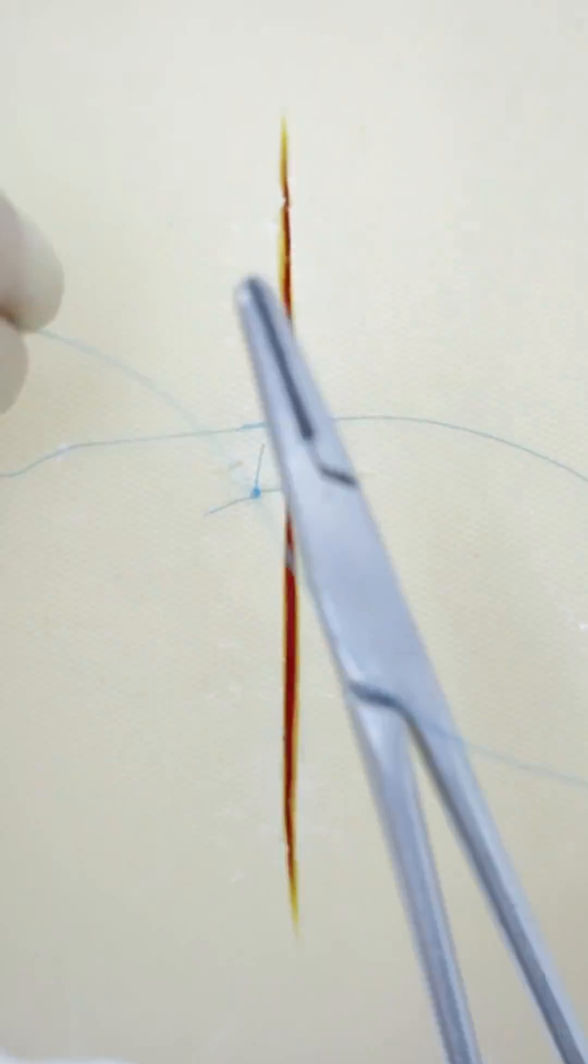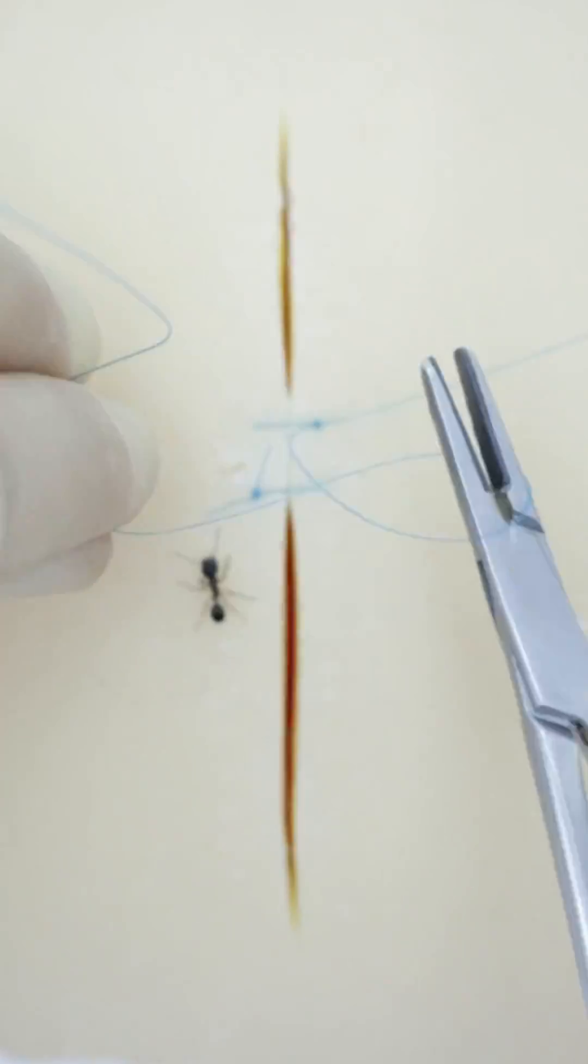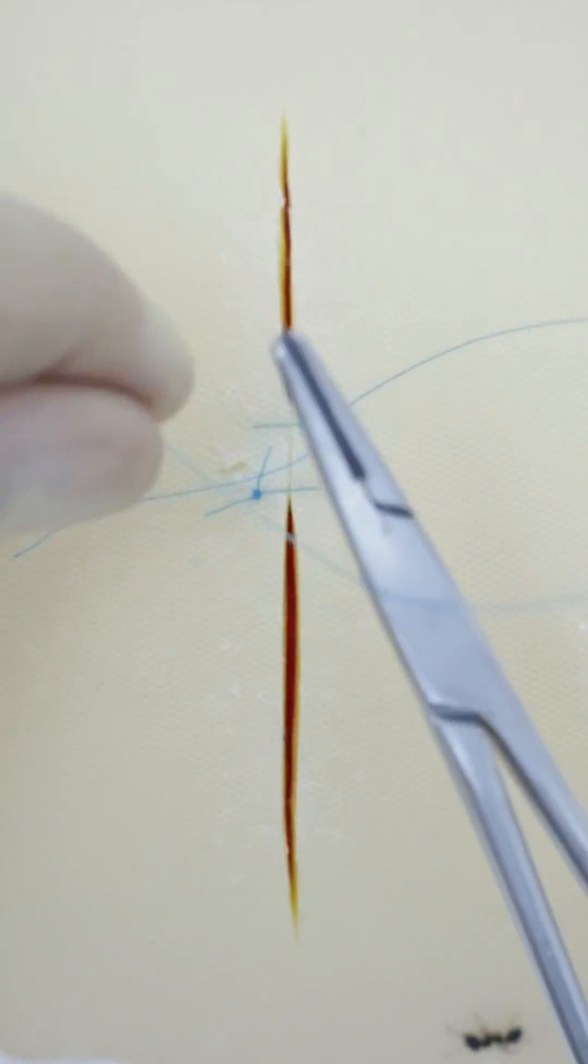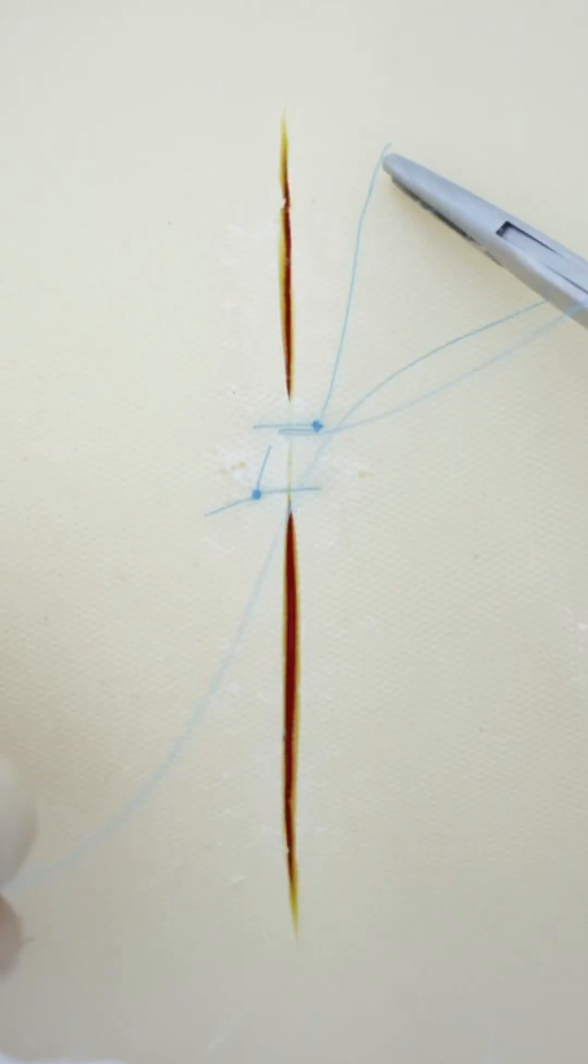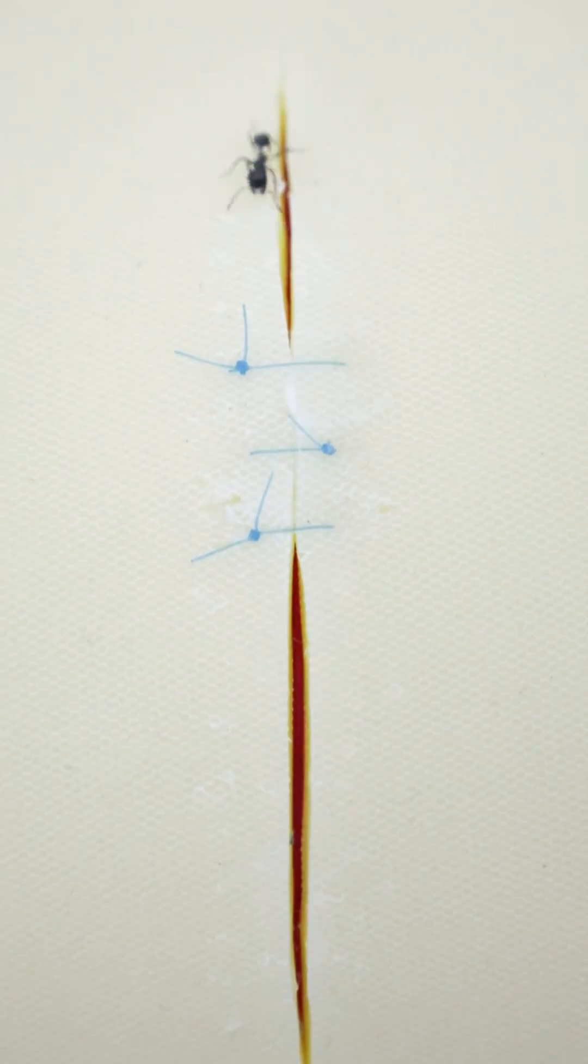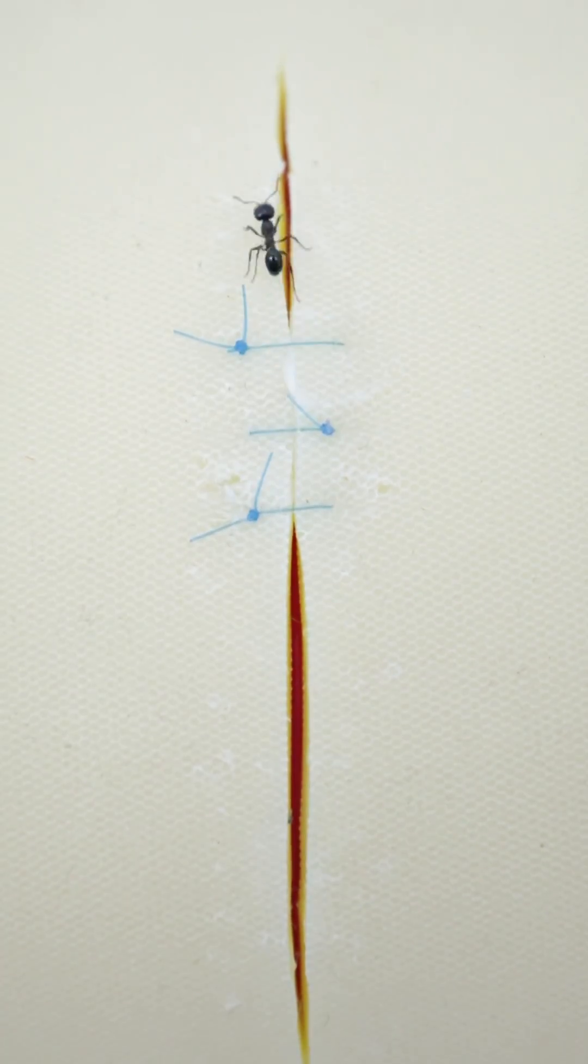The mandibles also loosen after the ants die, which is not ideal. This procedure does kill the ants because after the mandibles latch on to close the skin wounds, their bodies have to be twisted off. But ants themselves have been performing surgery long before us humans even existed.